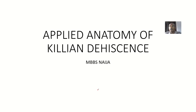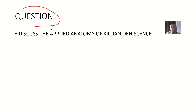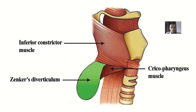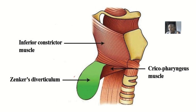Today we're talking about the applied anatomy of Killian's dehiscence. Killian's dehiscence is a triangular area in the region of the pharynx. This area is triangular and open, with muscles going up and muscles going down, forming a triangle that remains open.